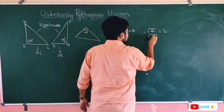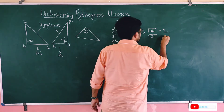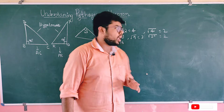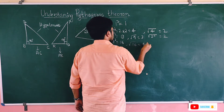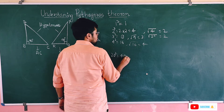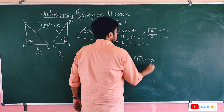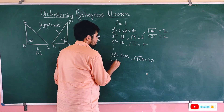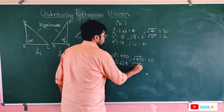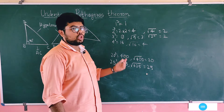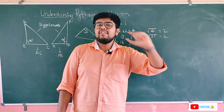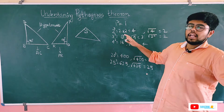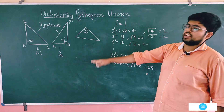We are dealing with lengths, and length is always positive, so let us focus on squares of positive numbers. Knowing squares from 1 to 20 will help us simplify calculations in Pythagoras theorem problems. Square root of 625 is 25 — remember this. Knowing these will help us simplify when we apply the Pythagoras theorem.